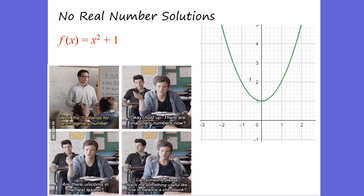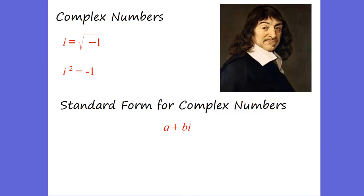This was developed by a guy named Descartes, and made really famous by one of my favorite mathematicians, a guy named Euler — Leonard Euler. You can see that if we set this function equal to 0, we have x squared is equal to negative 1. Then we square root it, which means x is equal to the square root of negative 1. And you can see there are no real solutions — there's no place where it crosses the x-axis. So they developed a thing called complex numbers.